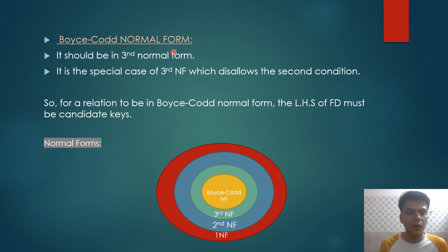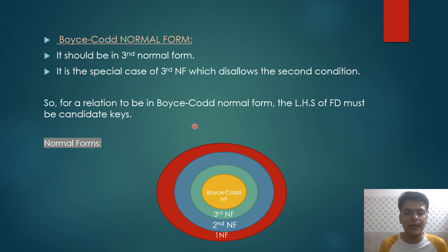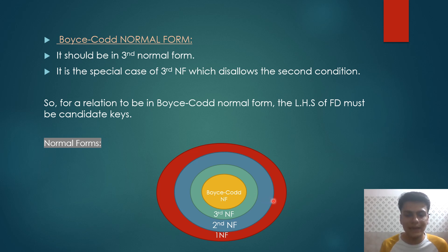Boyce-Codd normal form should be in third normal form, which we have checked. It is a special case of third normal form that disallows the second condition — where the right-hand side of a functional dependency can be a prime attribute. For a relation to be in Boyce-Codd normal form, the left-hand side of every functional dependency must be a candidate key. Combining all normal forms: if a relation is in third normal form it is also in second and first — visualized as concentric circles: first is outermost, then second, then third.